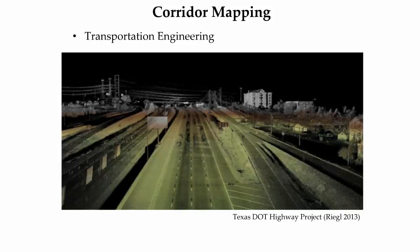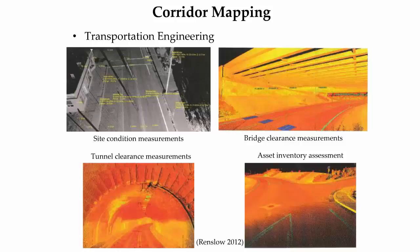Corridor mapping projects utilizing LiDAR data for engineering design of transportation infrastructure is increasing. LiDAR is collected from a variety of platforms including terrestrial, mobile terrestrial, and airborne LiDAR systems. The image is a colorized point cloud from a Texas Department of Transportation pilot study on the use of mobile terrestrial LiDAR for engineering design. Information derived from these transportation-related corridor mapping projects includes site condition measurements such as road slope and lane width as shown in the top left image, bridge and sign clearances as shown in the top right image, horizontal and vertical clearance measurements for tunnels as shown in the bottom left image, and asset inventory management and inspection as shown in the bottom right image.